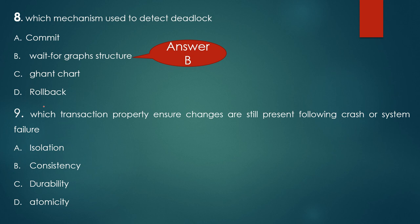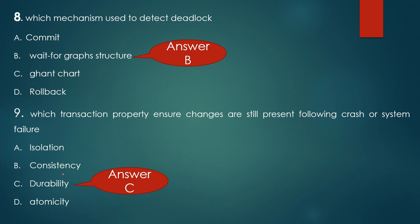Atomicity means atomic units. Consistency means the system is in a consistent state after each transaction. Durability means the system should hold its latest state after restart, failure, or crash. Isolation means one transaction has no effect on the result of another. The answer is durability.